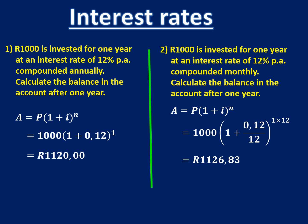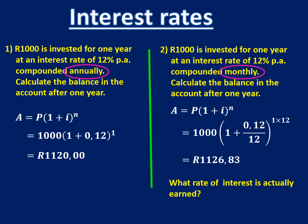We end up with slightly more. Why is that? When we compound annually, we end up with one amount. But when we compound monthly, we are earning just a little bit extra interest every single month. I want to know how much interest I'm actually earning — it's not 12%, because 12% should give me 1,120, but I'm ending up with slightly more.